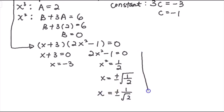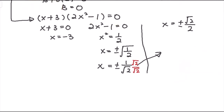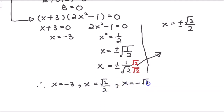To simplify further, multiply by root 2 over root 2 to rationalize the denominator. You get plus or minus root 2 over 2. So in conclusion, we have three roots in total: x equals negative 3, x equals positive root 2 over 2, and x equals negative root 2 over 2. Thank you for watching.